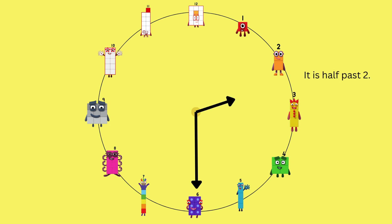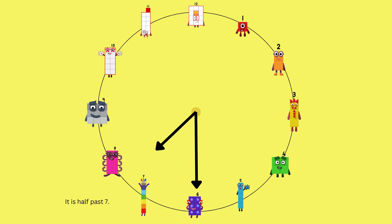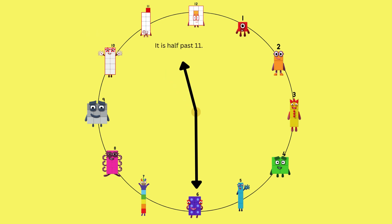It is half past one. It is half past two. It is half past three. It is half past four. It is half past five. It is half past six. It is half past seven. It is half past eight. It is half past nine. It is half past ten. It is half past eleven. And it is half past twelve. That was brilliant.